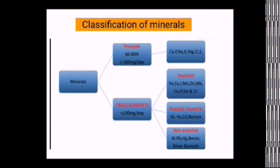Minerals have been classified on the basis of nutritional requirements into two categories: principal minerals — also called macro minerals — and trace minerals, also called micro minerals. If the daily requirement of a mineral is greater than 100 mg per day, it is categorized as a principal or macro mineral. If the body needs less than 100 mg per day, it is categorized as a micro mineral.